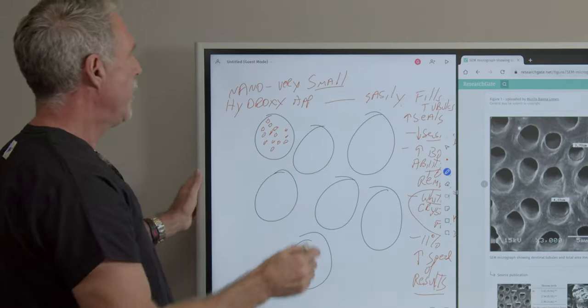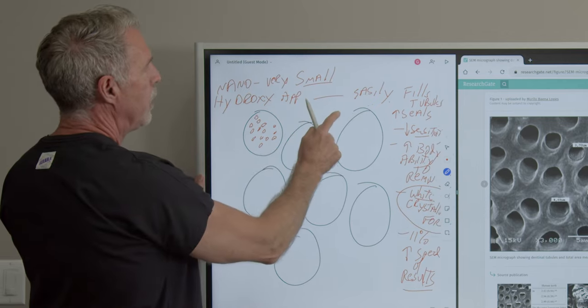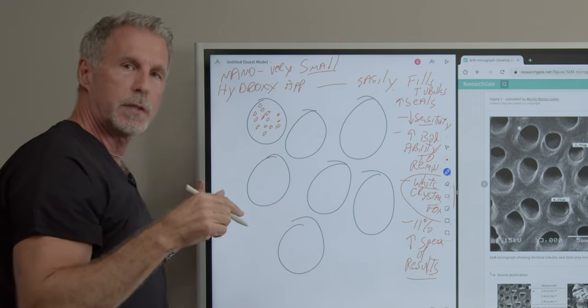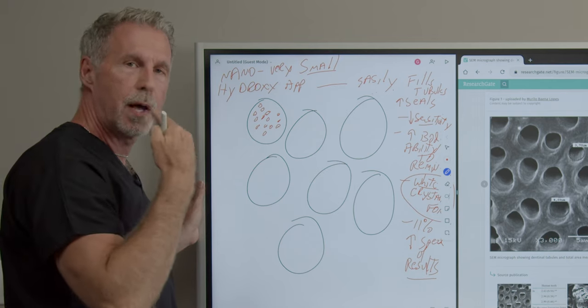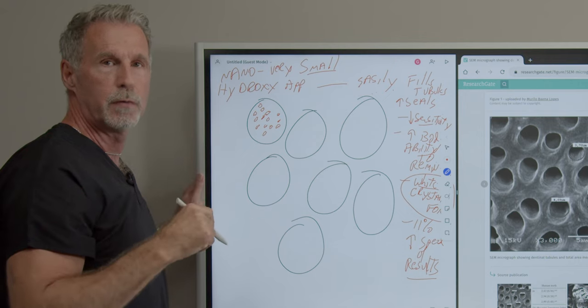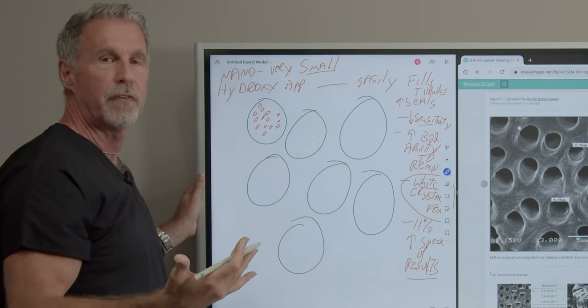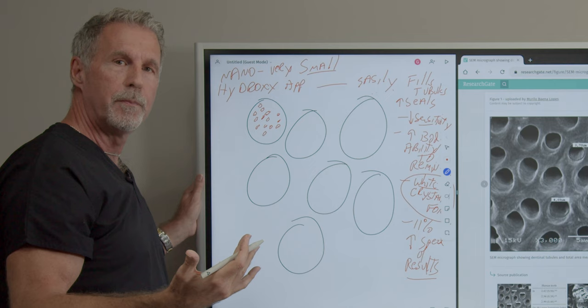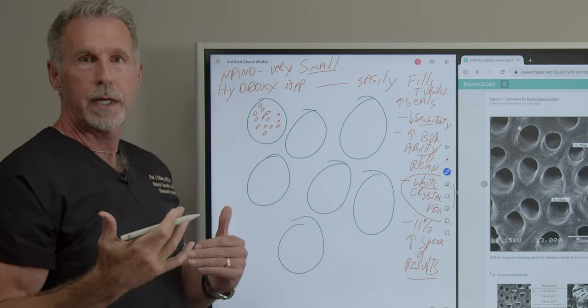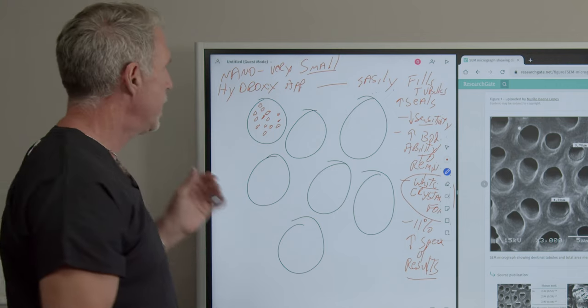So we want to make sure if we get a nano-sized hydroxyapatite, and you want to check, does that toothpaste, does that any type of powder, any type of thing you're using, is it a nano form? Does it have enough of the nano form? Is it in a high enough concentration to make sure that it can bring about a result? And what result would that be?